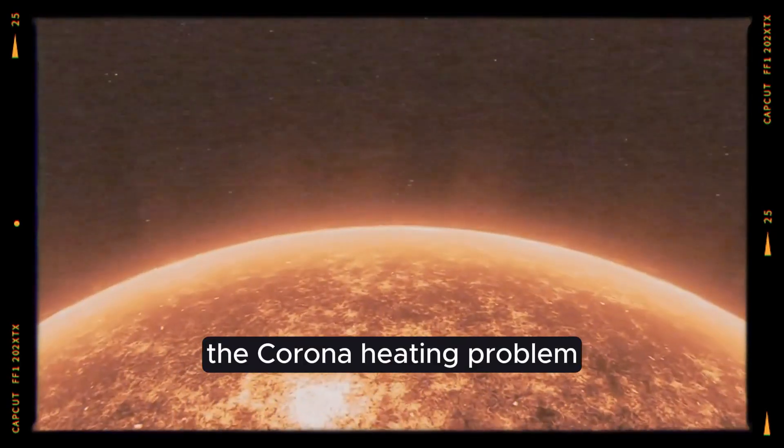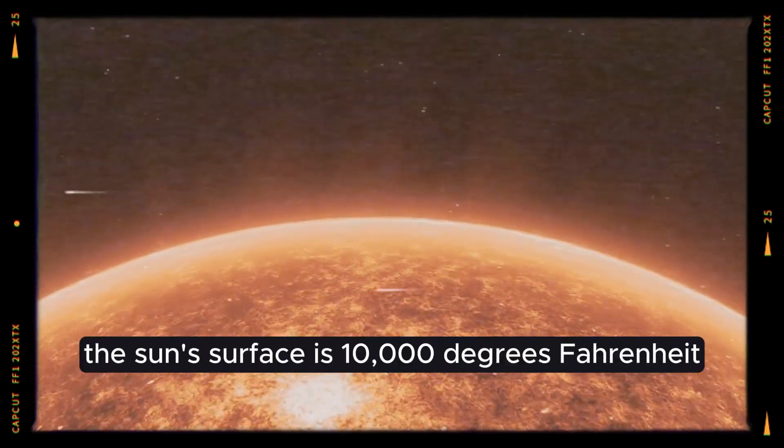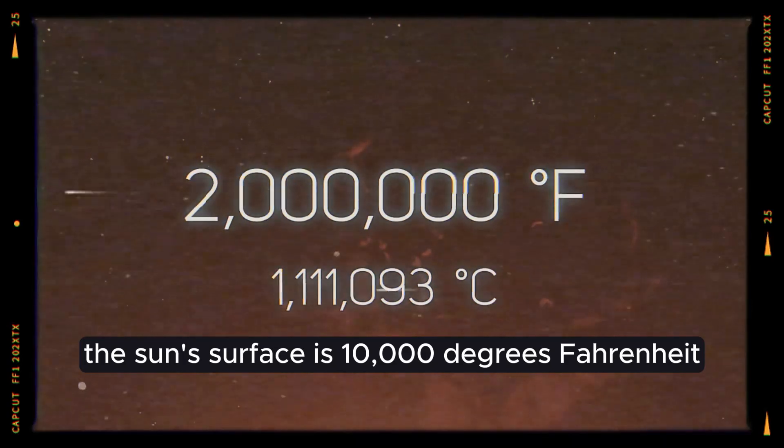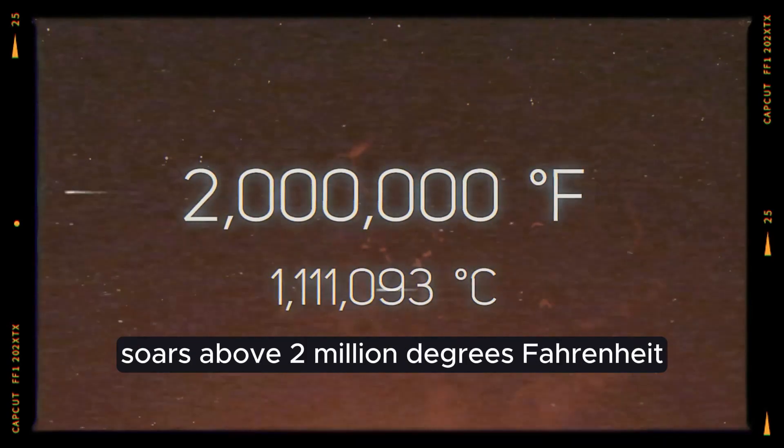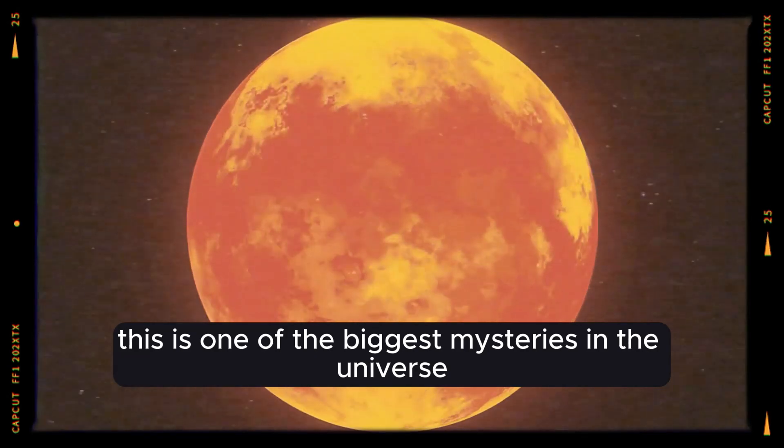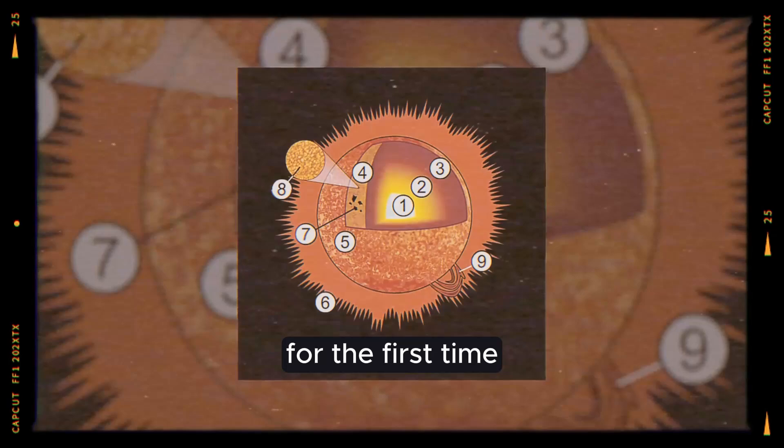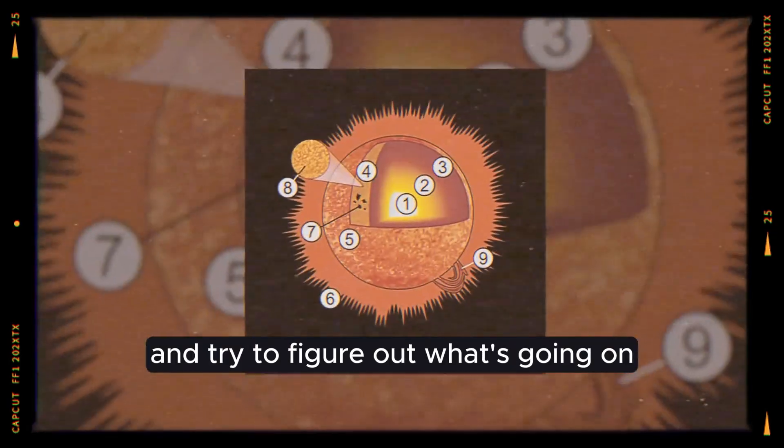The coronal heating problem is another big question for the Parker Solar Probe. The sun's surface is 10,000 degrees Fahrenheit, but the temperature in the corona soars above 2 million degrees Fahrenheit. This is one of the biggest mysteries in the universe. Astrophysicists will measure things inside the corona for the first time and try to figure out what's going on.